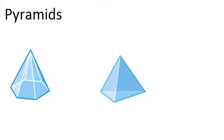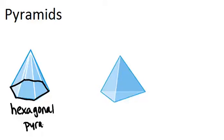We have two pyramids. The one on the left, if you notice its base, it's a hexagon. It has six sides, so that means this is a hexagonal pyramid because its base is a hexagon.